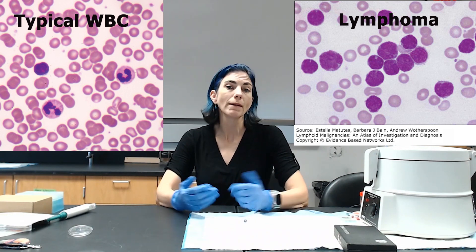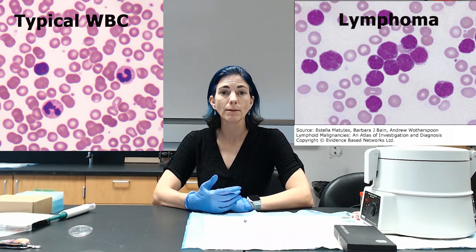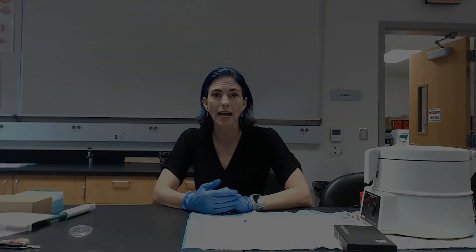If you see deviations from those standard numbers, that also indicates something. For instance, if somebody has a type of lymphoma where they make too many lymphocytes, then on a differential white blood cell count we'd expect their lymphocyte percentage to be really high — like maybe 80 or 90 percent rather than the typical 20 to 30 percent.